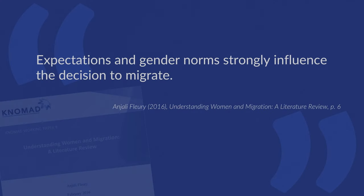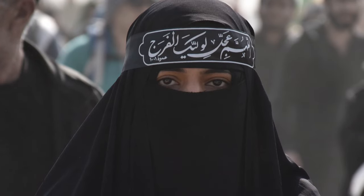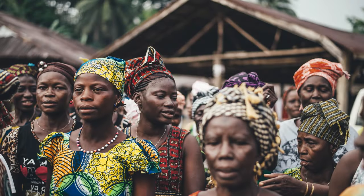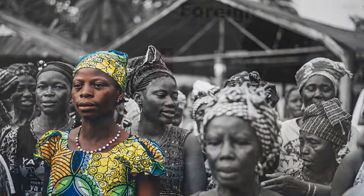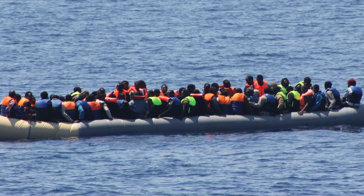This quote nicely summarizes how migration and gender are interlinked: expectations and gender norms strongly influence the decision to migrate. Depending on the country and the families people come from, and the gender norms pervasive in that society, this can strongly influence not only the original decision to migrate and the ability to migrate, but also where to migrate and under what conditions.